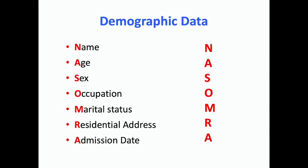Starting with demographic data — this is something we do day in and day out, but at times we miss out a few important things. There is an interesting mnemonic for this: NASOMRA. N is for name, A is for age, S is for sex, O is for occupation, M is for marital status, R is for residential address, and A is for admission date or when the patient came to you. If you have such mnemonics, the probability that you will miss out will be less.